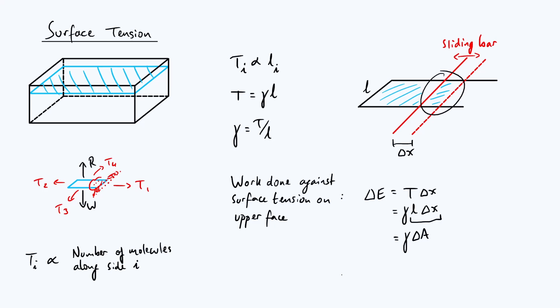That gives us a new way to interpret gamma. You could write it as delta E by delta A. In other words, it's the energy cost of creating a unit of surface area.